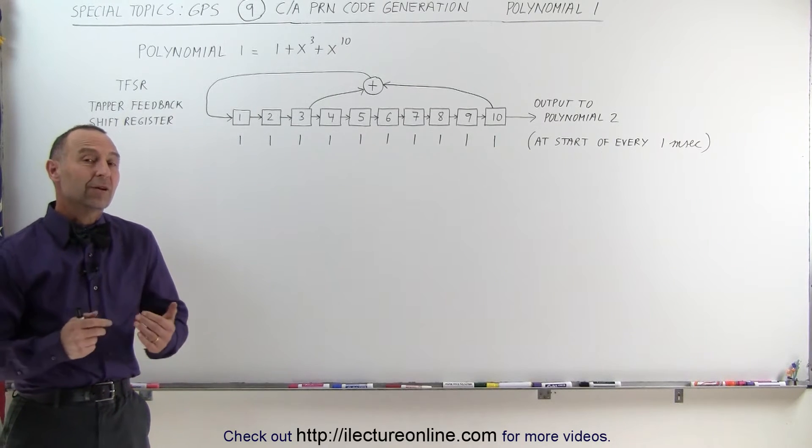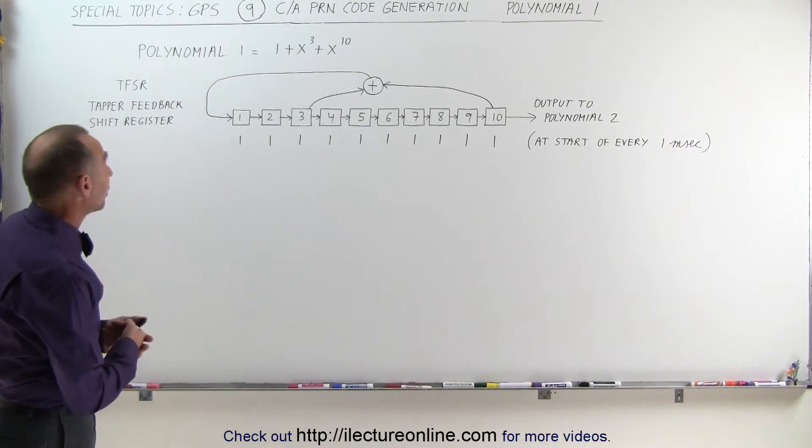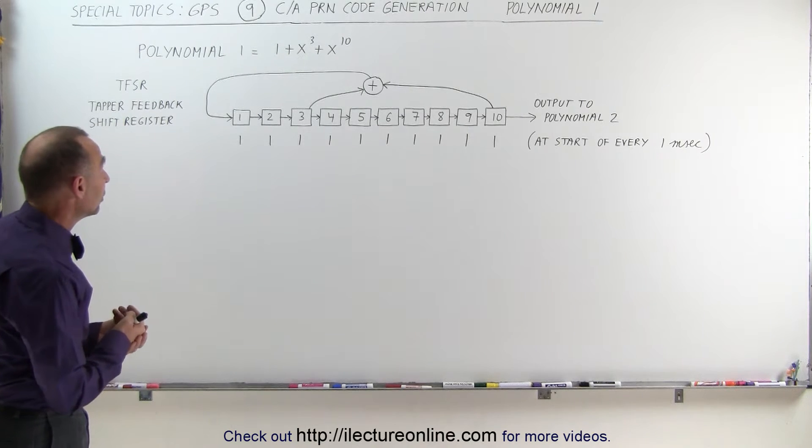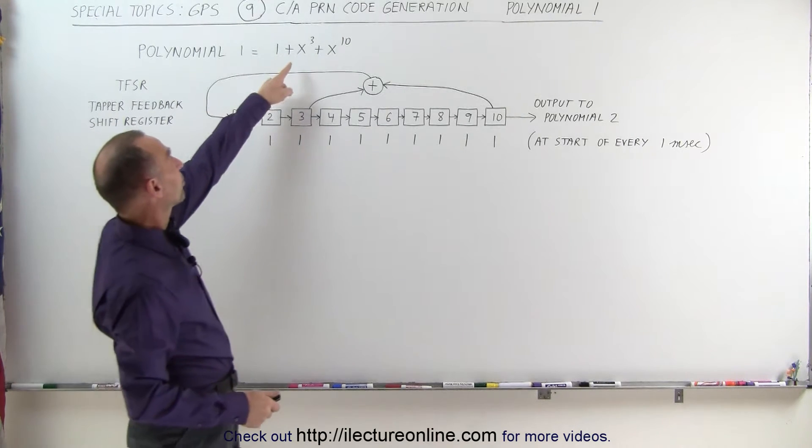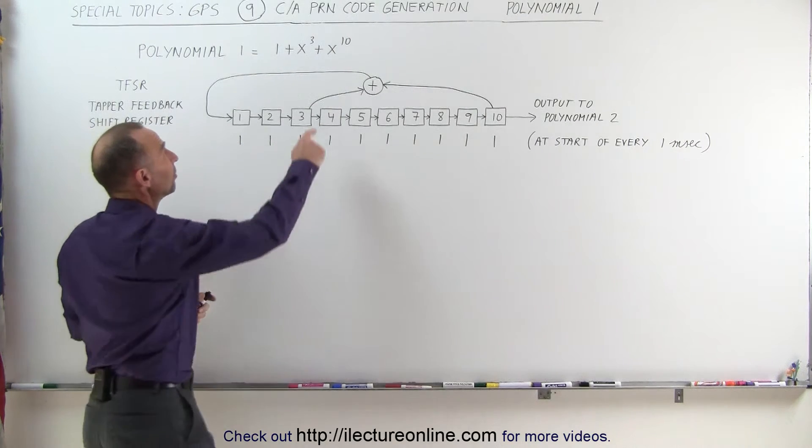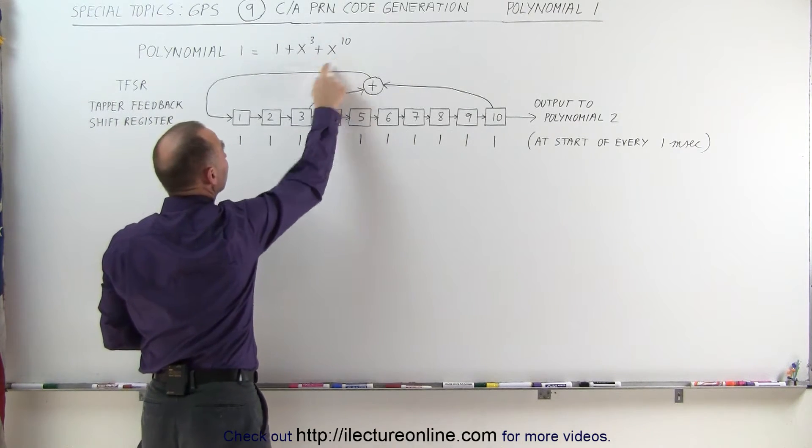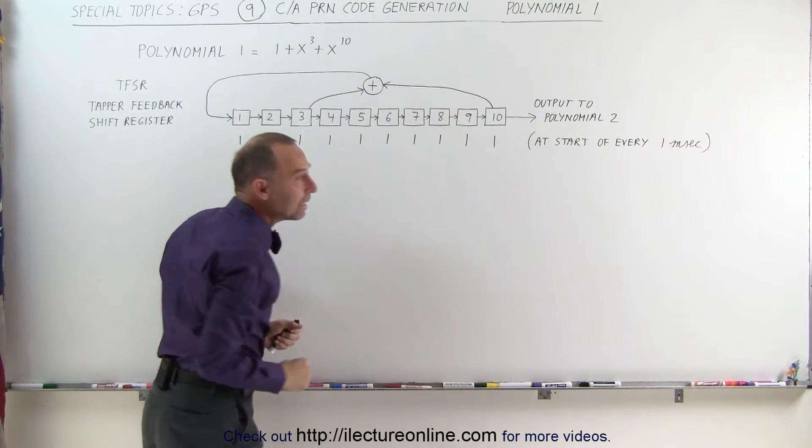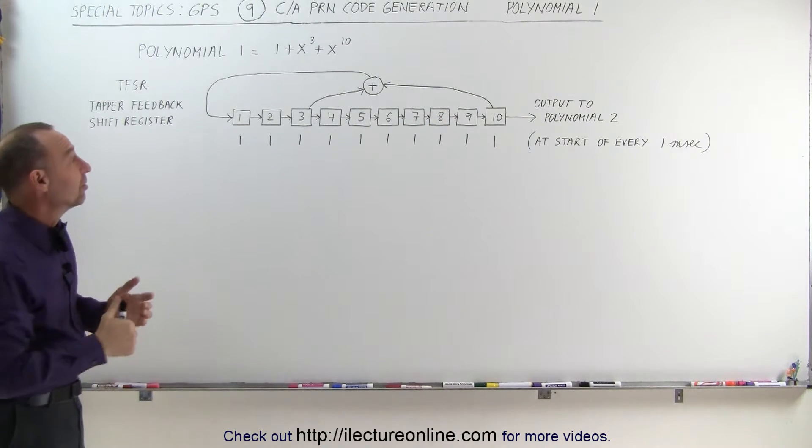Welcome to ElectronLine. Well, here's our first polynomial. We call that the first generator polynomial and the formula is 1 plus x to the 3rd plus x to the 10th. Again, those are not exponents, it simply means it's the 3rd bit and the 10th bit in a 10-bit string in a register in a piece of hardware.